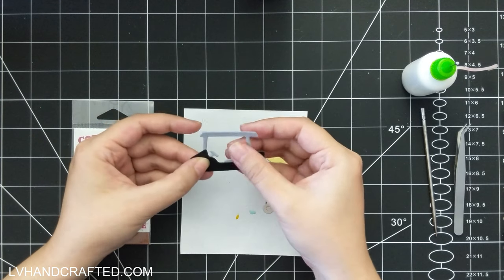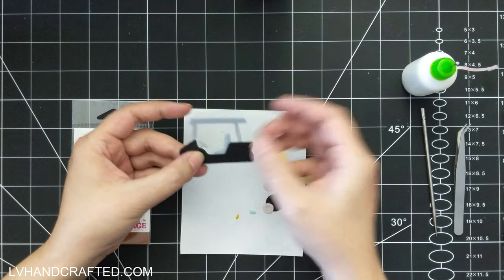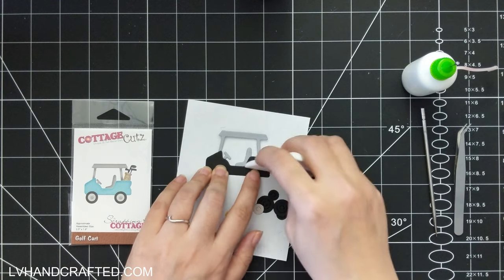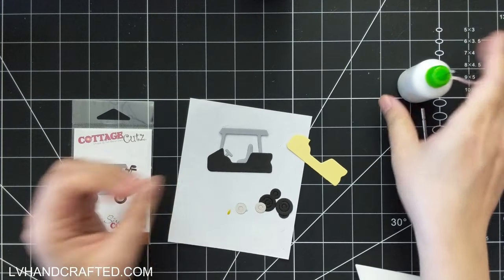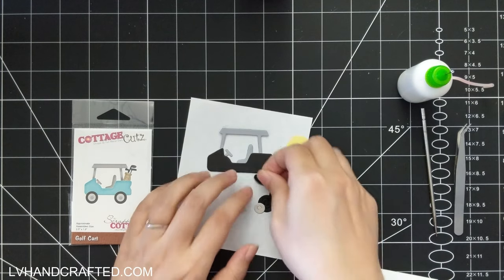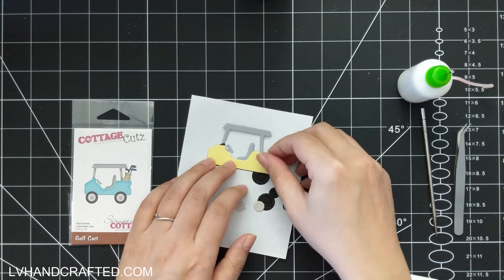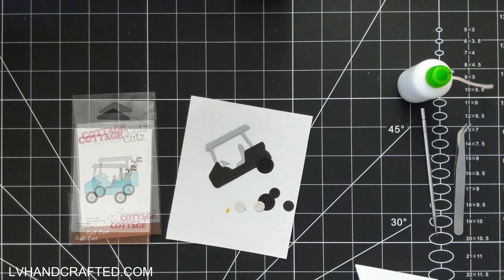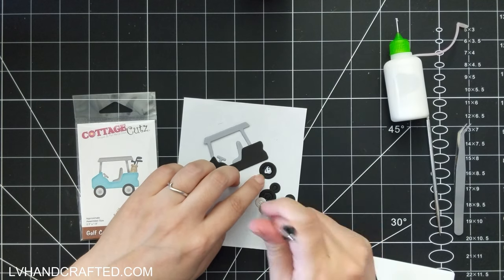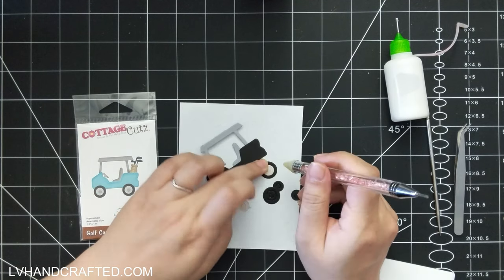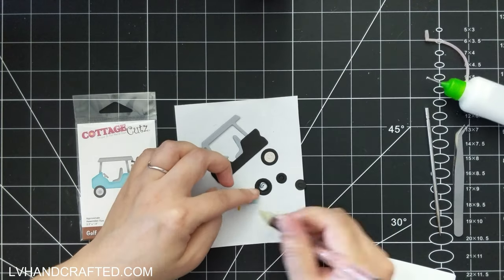Here we have a golf cart and this actually does come with a little golf bag and golf clubs. They're all individual, so you'll have three individual golf clubs and the golf bag as separate die cuts so you can add that to the back of your golf cart if you want.